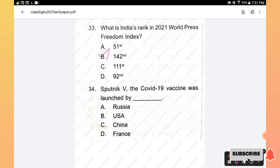Question number 34: Sputnik V, the COVID-19 vaccine was launched by Russia, USA, China, or France. The right answer is option A, Russia.